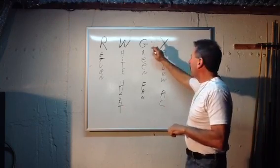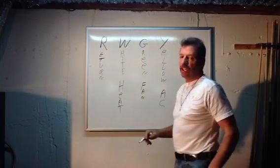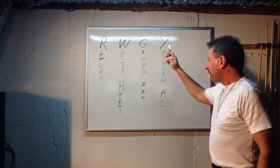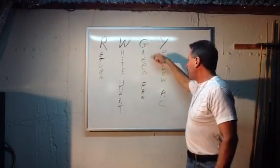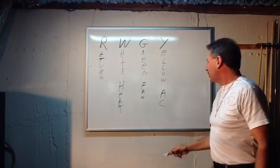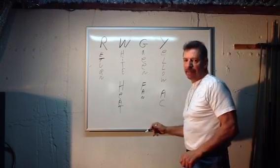Why these are lettered this way is for color coding. W is white, G is green, and yellow is air conditioning. It's that simple.